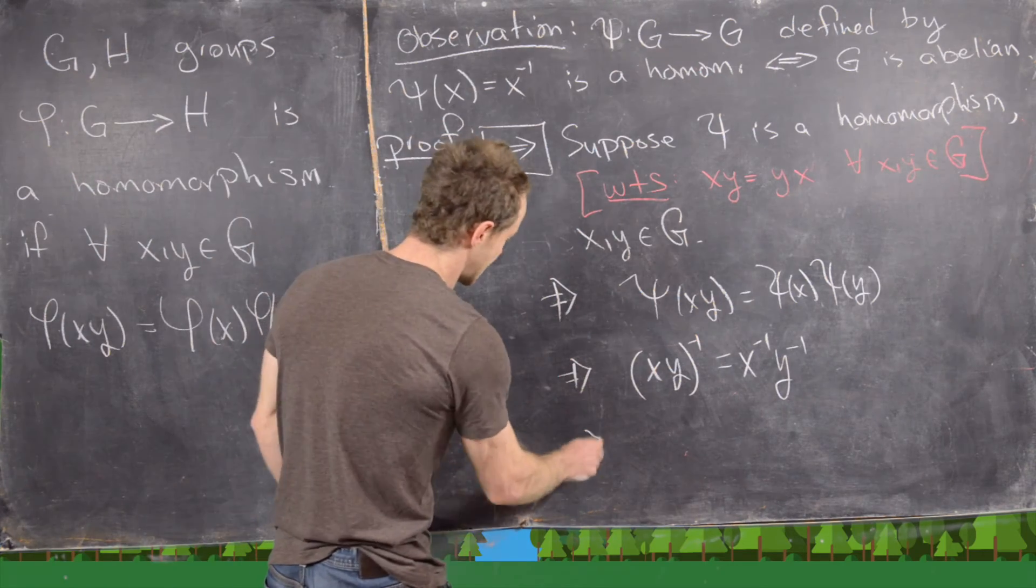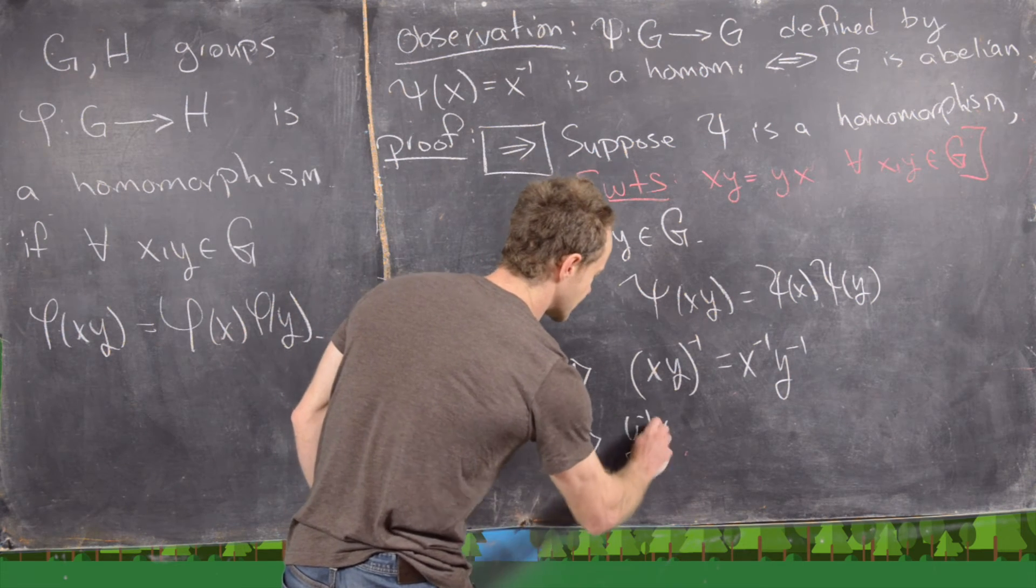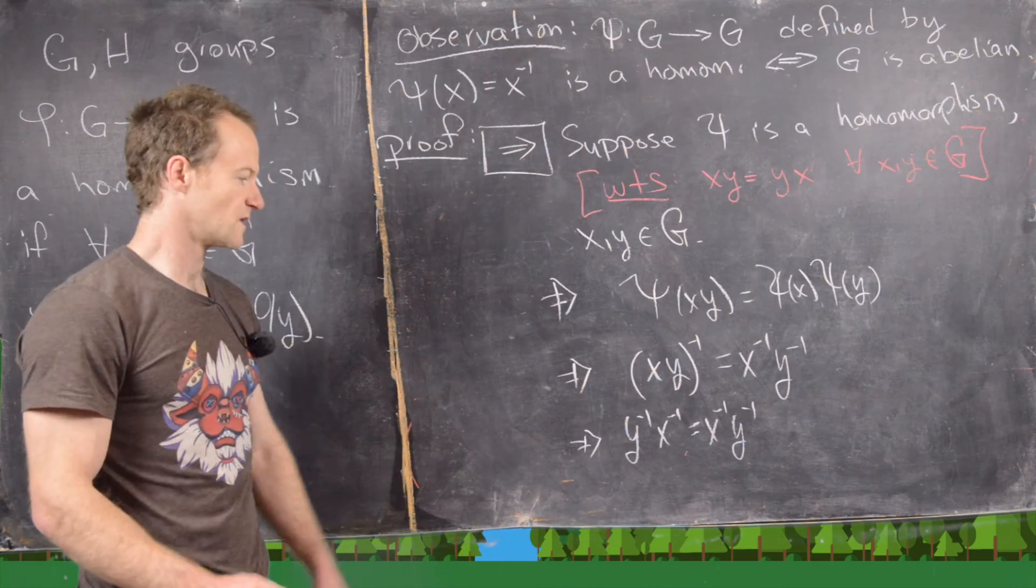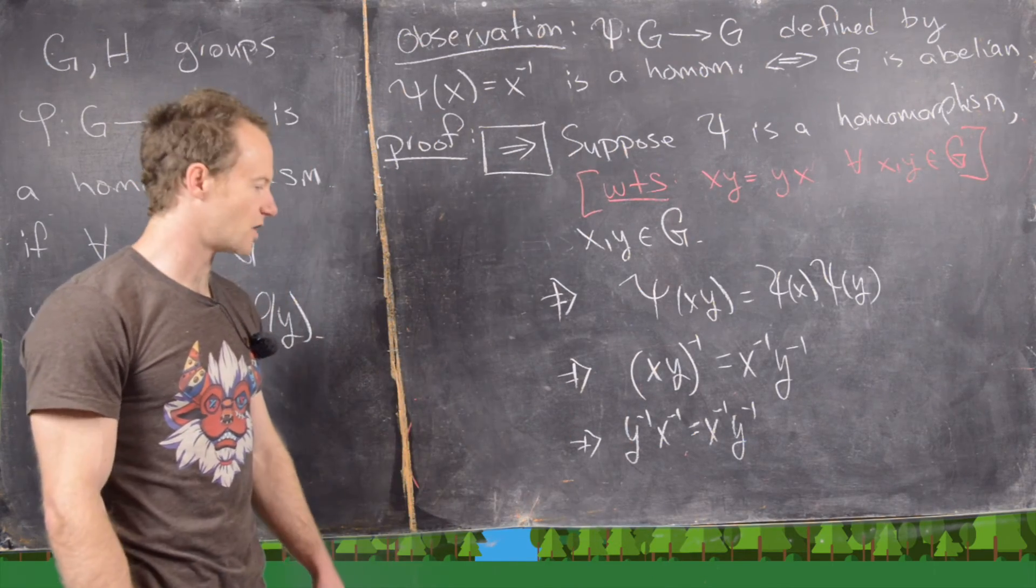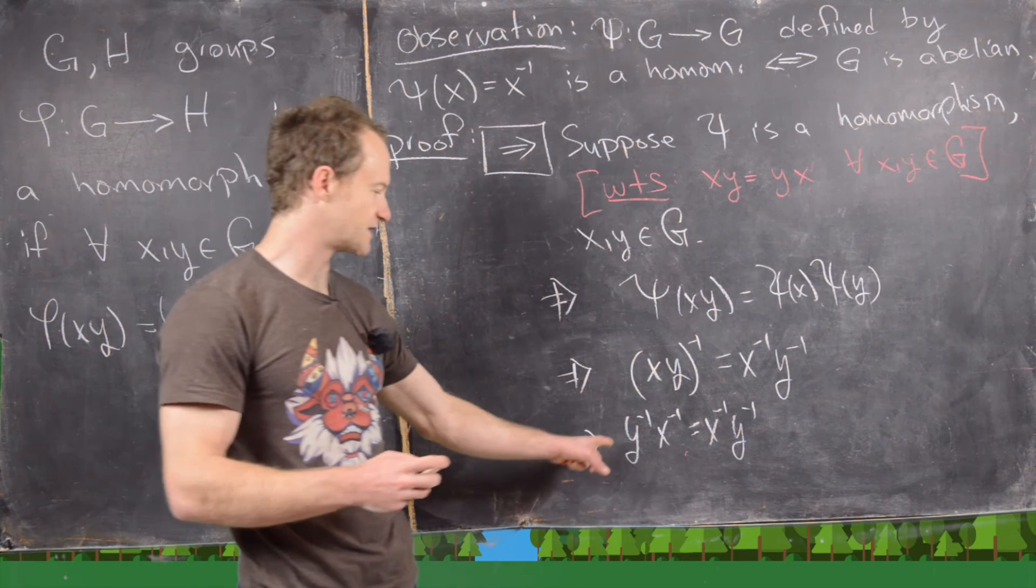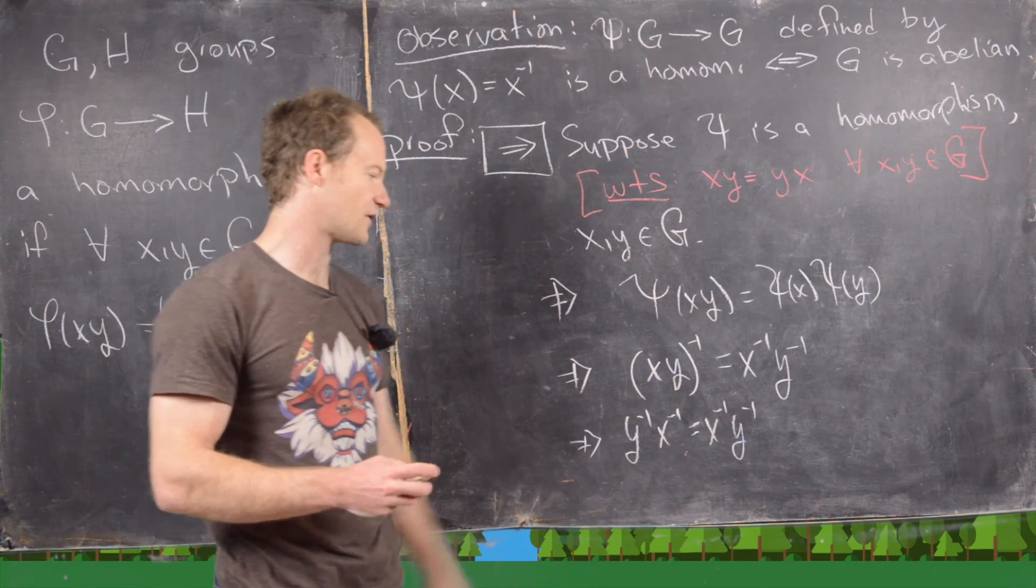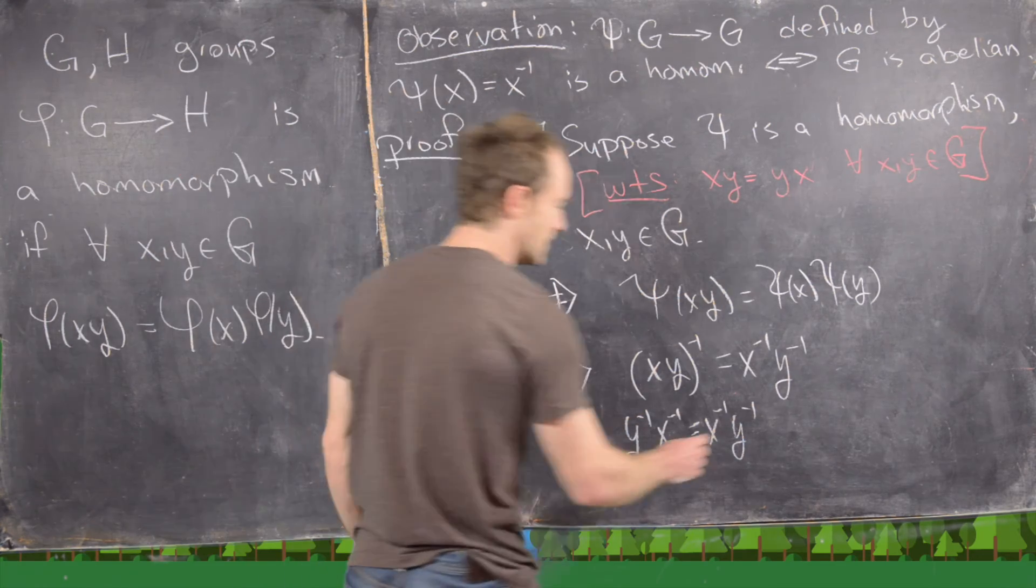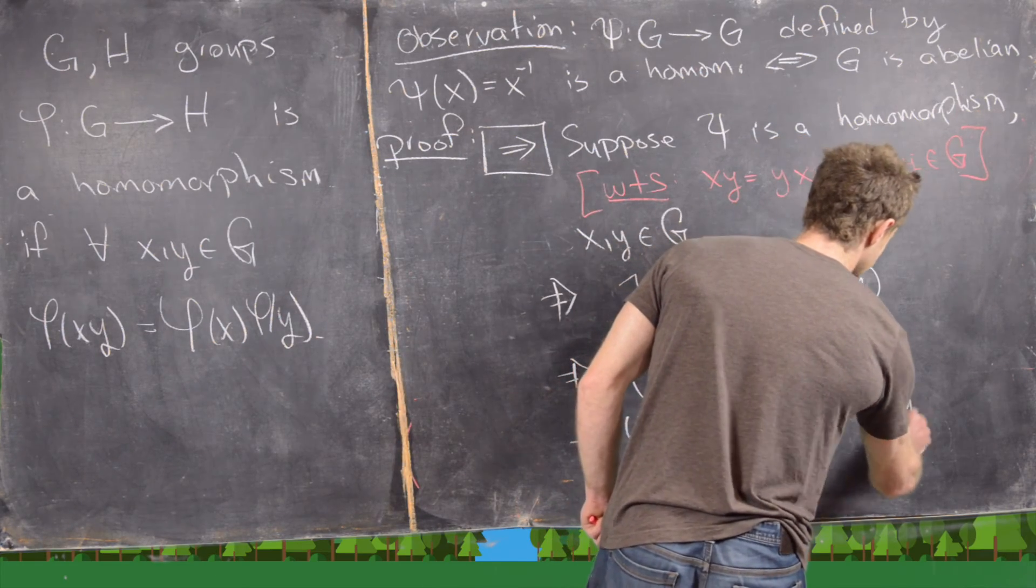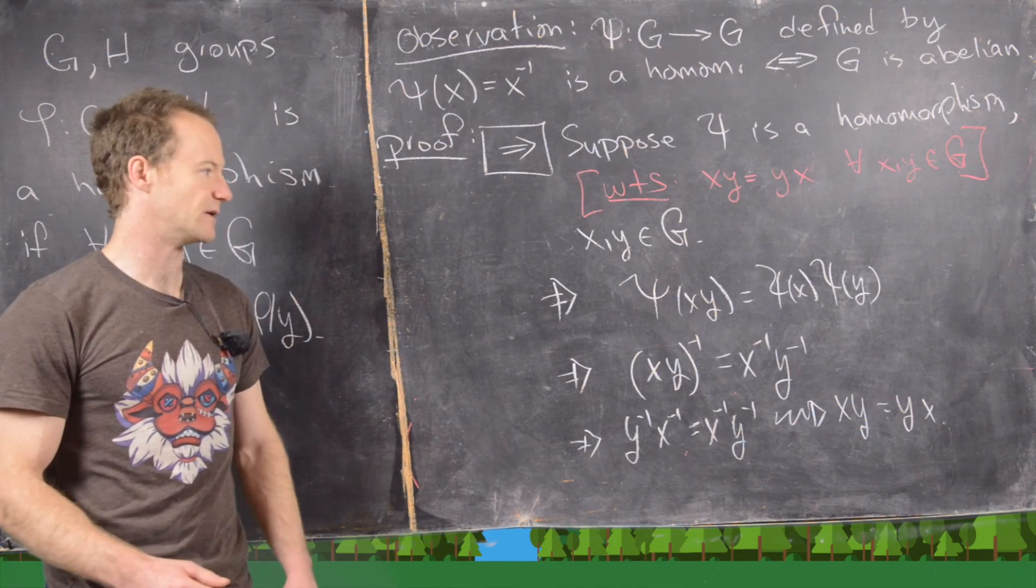But using the shoes and socks theorem, just like we did in the last step, this tells us that y inverse x inverse equals x inverse y inverse. But from here, it's not too hard to show by left and right multiplying by the correct elements. Like notice if we left and right multiply by y, and if we left and right multiply by x in the correct order, this is going to lead us towards xy equals yx, which is exactly what we want. We want this thing to be abelian.